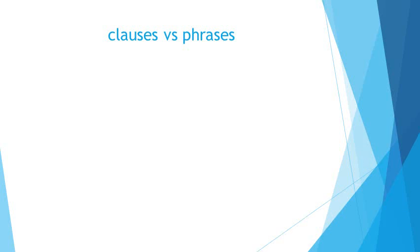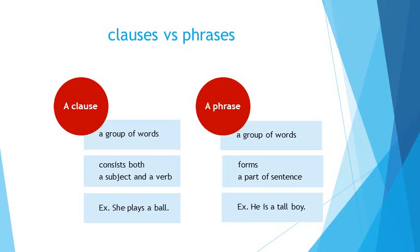Clauses versus phrases. A clause is a group of words. A phrase is a group of words too. A clause consists both a subject and a verb. A phrase forms a part of a sentence. Here is an example for a clause. She plays a ball. All of it is a clause. An independent clause. Here is an example for a phrase. He is a tall boy. A tall boy is a phrase. Forms a part of a sentence.